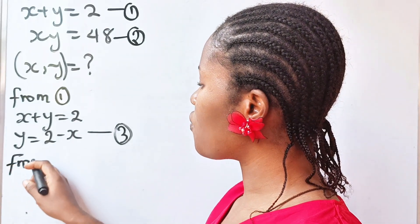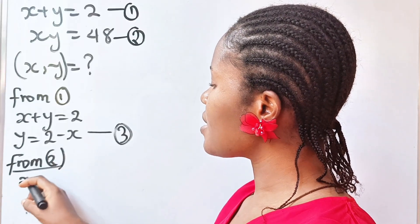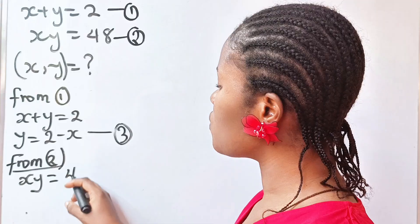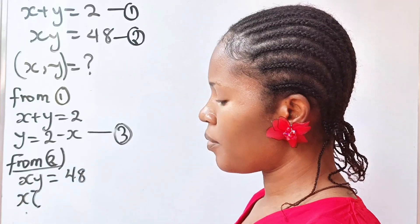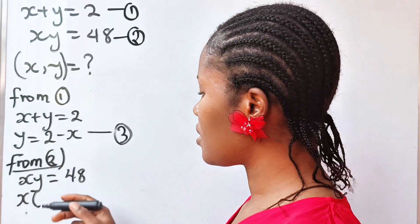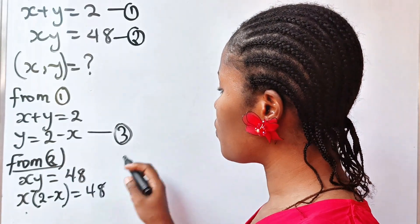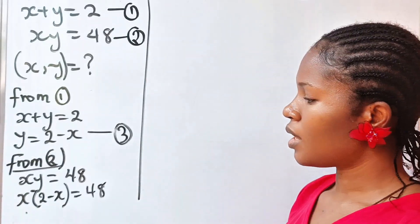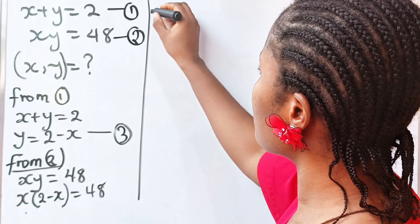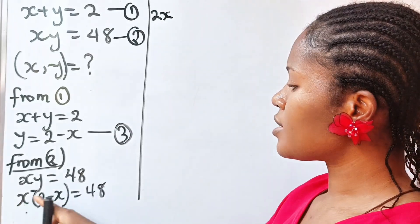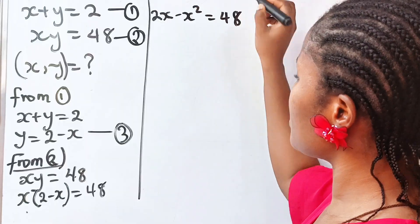From equation 2, we have x multiplied by y equals 48. Substituting equation 3, y equals 2 minus x, we get x multiplied by 2 minus x equals 48. Opening the brackets: x times 2 is 2x, and x times minus x is minus x squared, so we have 2x minus x squared equals 48.